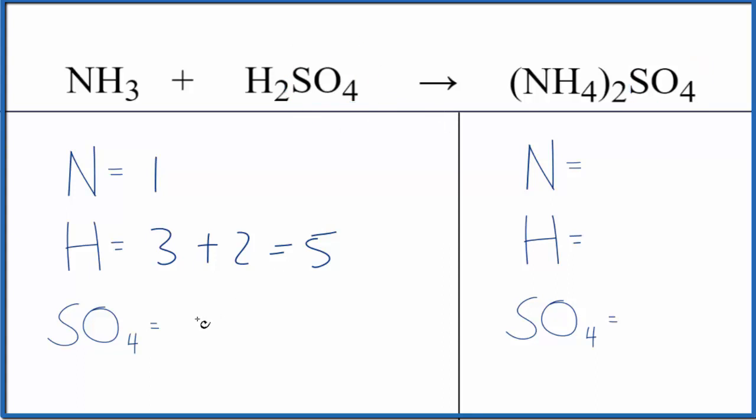So we have one sulfate ion here in the reactants. On the product side we have two times the one nitrogen, so that's two nitrogens. Two times the four hydrogens, that gives us eight. So this two, it goes to everything here in the parentheses. And then we have just the one sulfate.